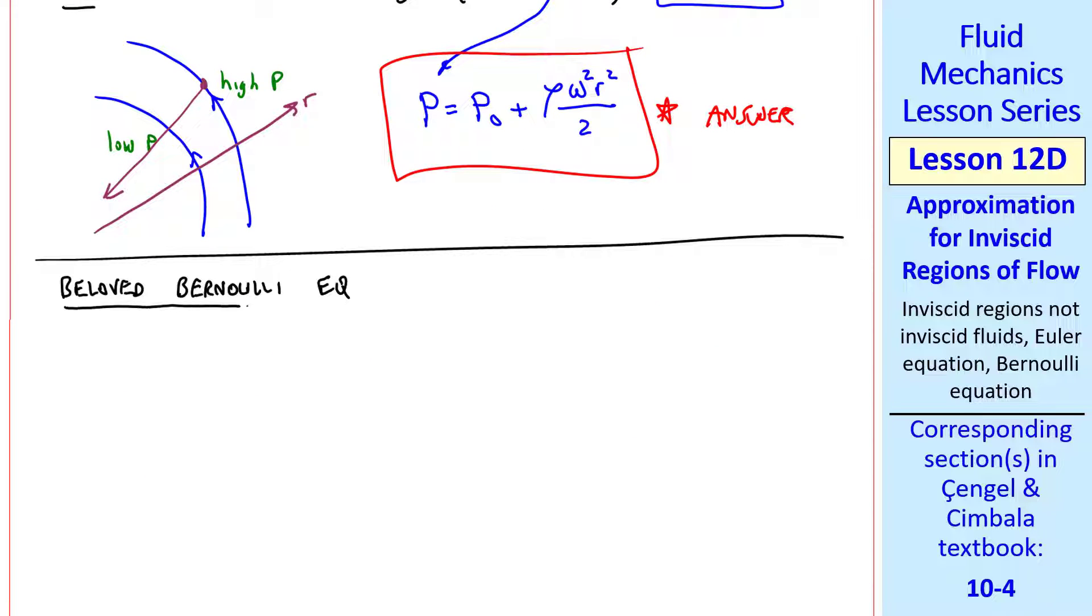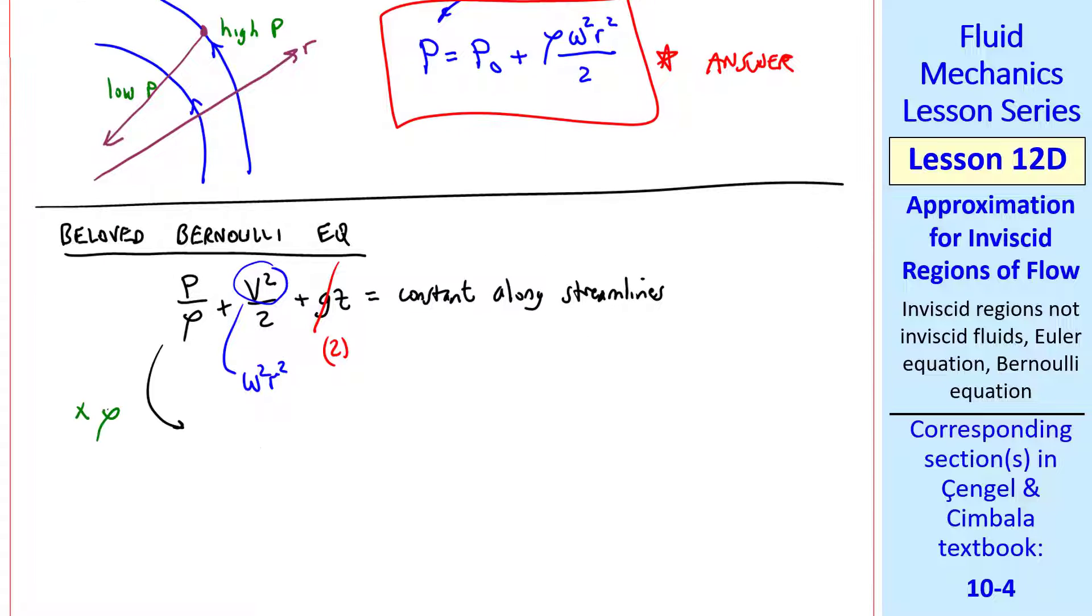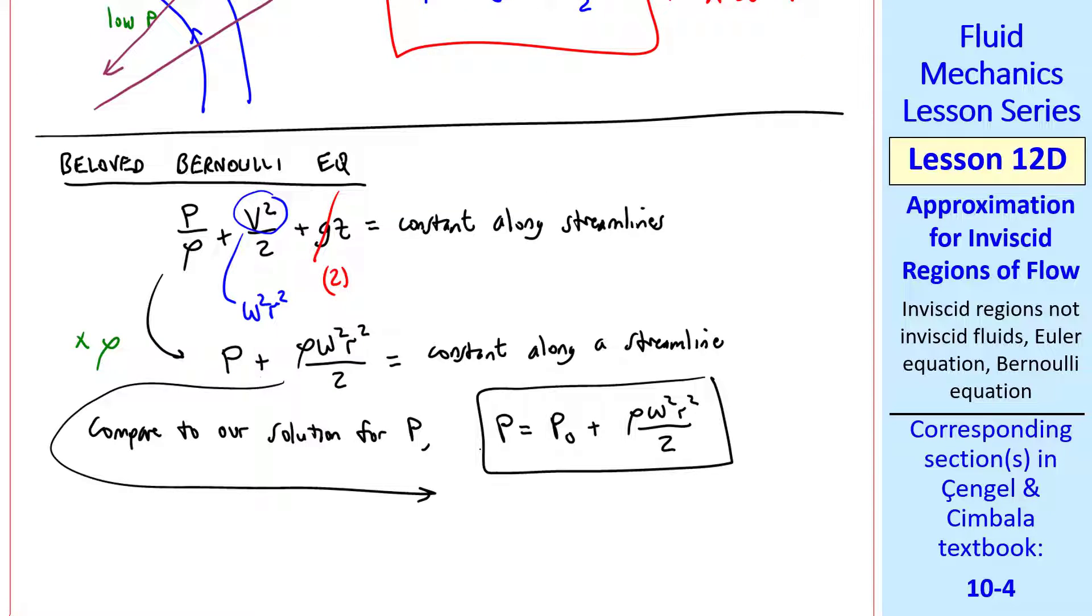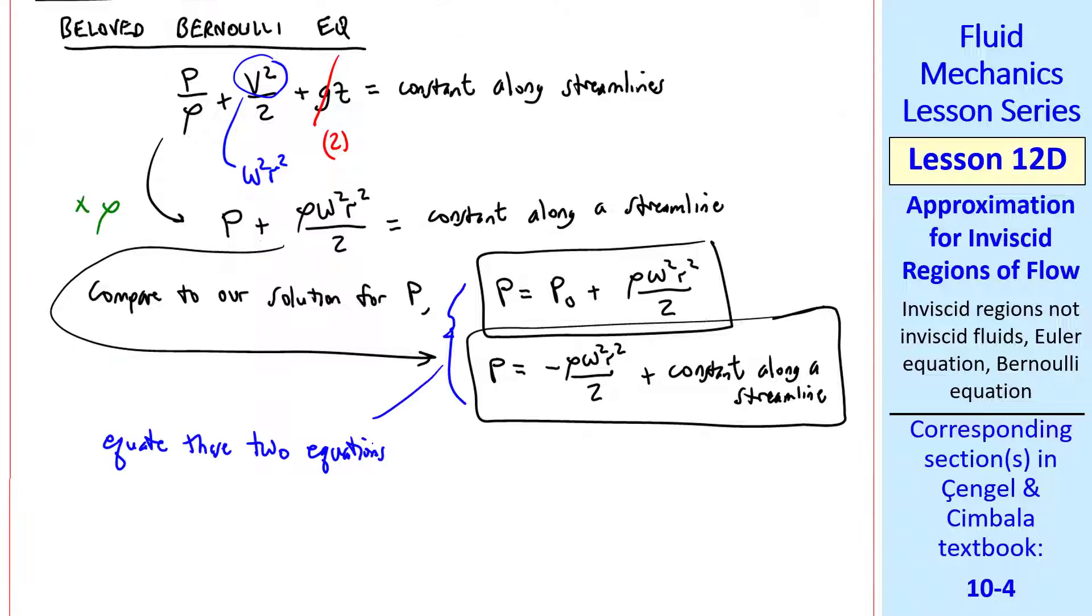Finally, let's examine this problem in terms of the beloved Bernoulli equation, which I rewrite here. By assumption 2, we neglect gravity, and v squared is omega squared r squared, for this solid body rotational flow. Multiplying all the terms by rho, we get p plus rho omega squared r squared over 2 equal constant along a streamline. Now let's compare this with our solution for p from up here. We had this equation from above, and this equation can be solved for p as well. Namely, p equal minus rho omega squared r squared over 2 plus the constant along a streamline. I keep writing that out because this constant will be different on different streamlines. So this is a second equation for p. If we equate these two equations, this constant along a streamline, which some people call the Bernoulli constant, turns out to be p naught plus rho omega squared r squared when we combine these two terms.